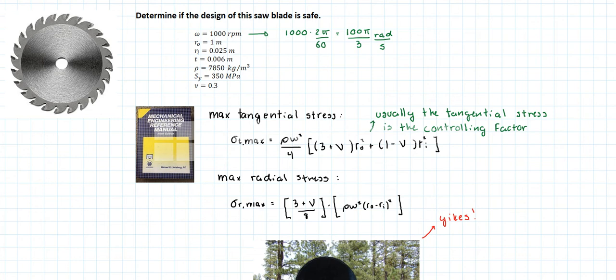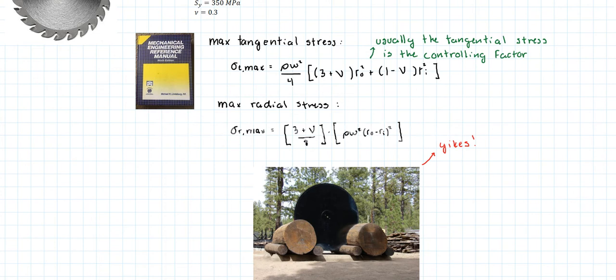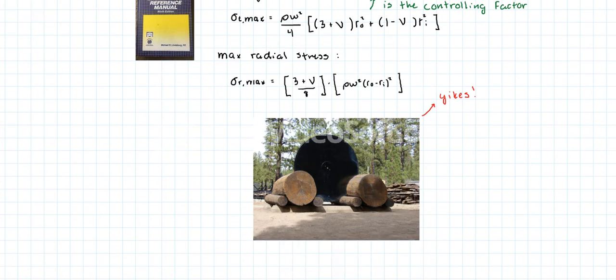So the first thing I should point out is that an outside diameter of 1 meter isn't a solid blade like you see on the left, it's more something like you see down over here. So it's really, really big.